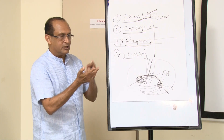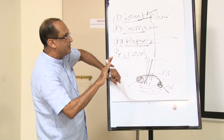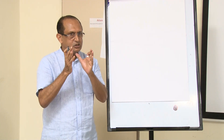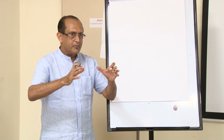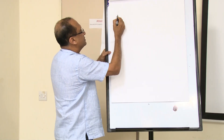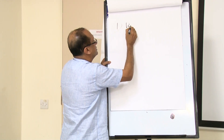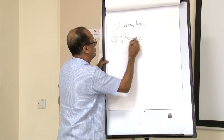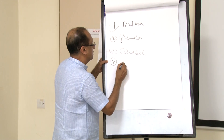After ruling out aphasia, come to dysarthria. Dysarthria is where, in spite of all normal facilities of speech, the patient is not able to communicate properly because the peripheral coordination of the speech muscles is defective. Dysarthria can be: bulbar dysarthria, pseudo-bulbar dysarthria, cerebellar dysarthria, or cortical dysarthria — these are the four types.